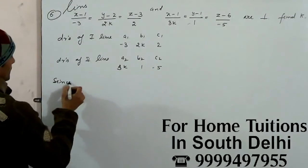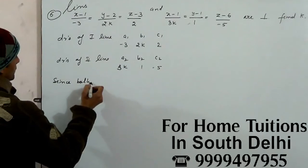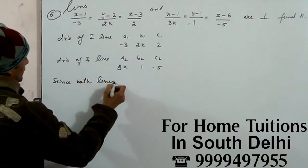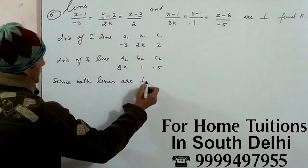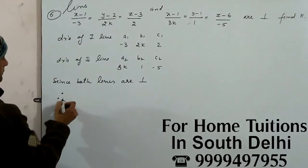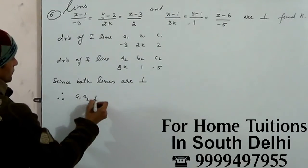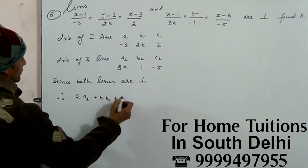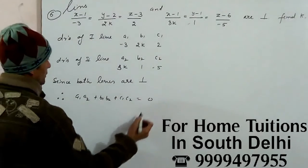Since both lines are perpendicular, therefore, A1 A2 plus B1 B2 plus C1 C2 is equal to 0.